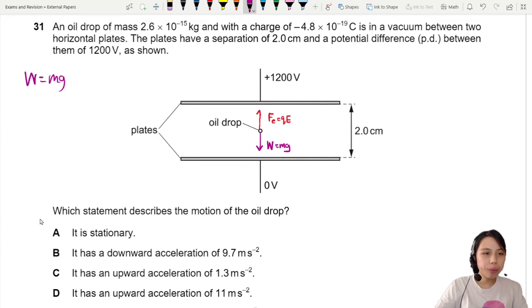Weight equals to mg. They gave us the mass here so we're going to write that in 2.6 times 10 negative 15 times 9.81 which will give us 2.55 times 10 to the negative 14.